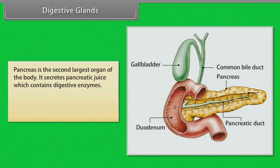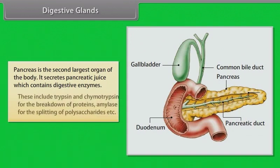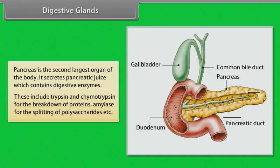The pancreas is the second largest organ of the body. It secretes pancreatic juice containing digestive enzymes, including trypsin and chymotrypsin for the breakdown of proteins, and amylase for the splitting of polysaccharides.